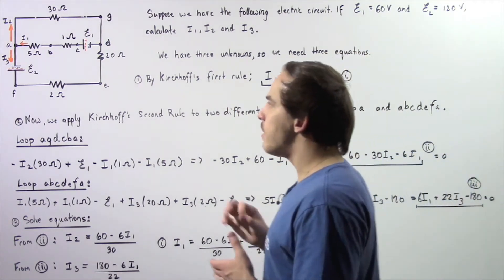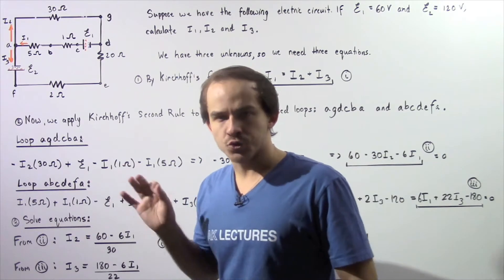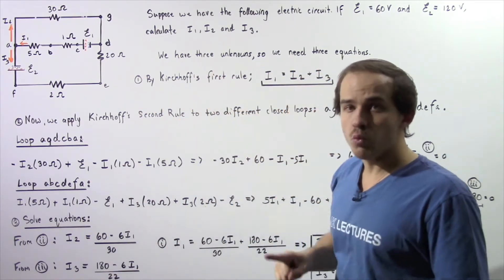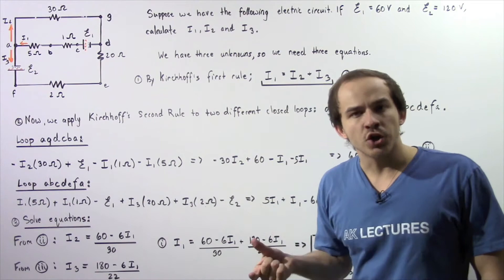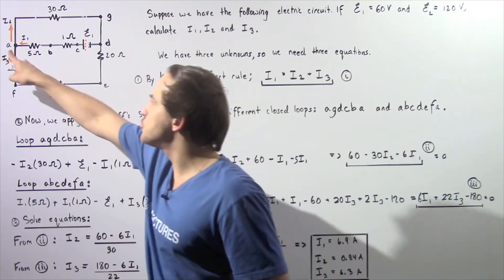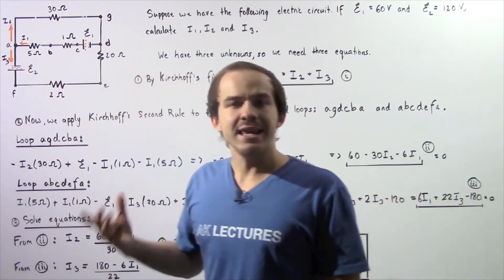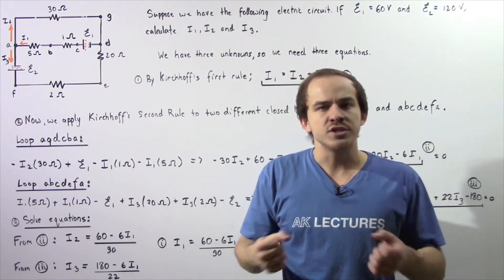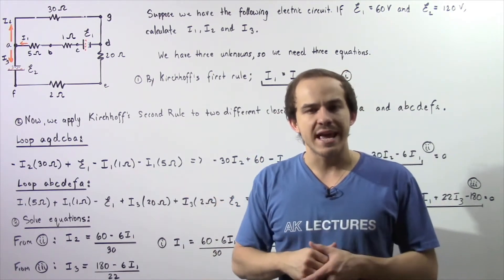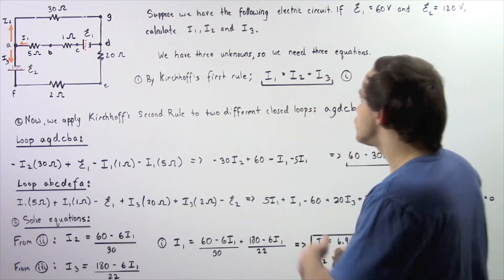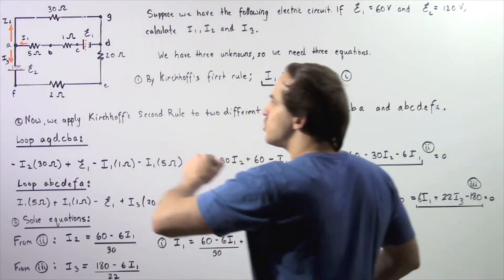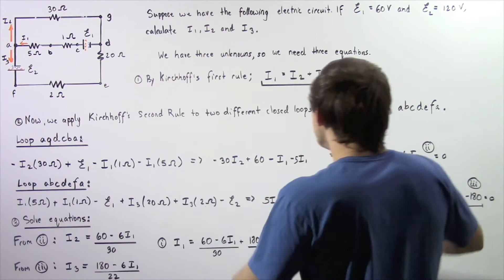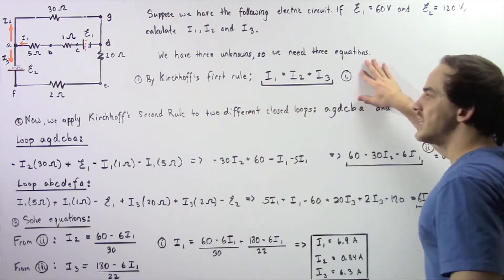Applying Kirchhoff's first rule: the electric current going into junction A is equal to the sum of the electric currents flowing out of that same junction. So I1 is equal to I2 plus I3. Let's call this Equation I.